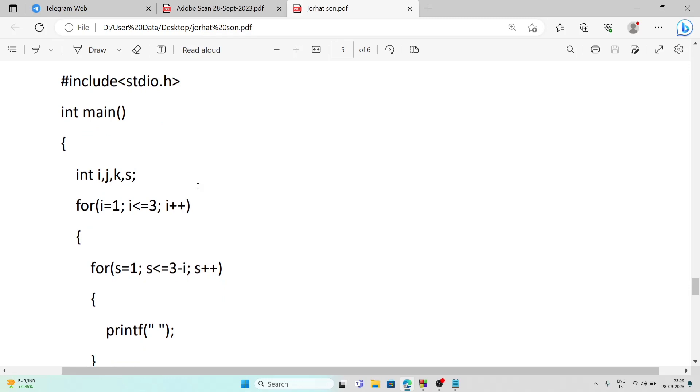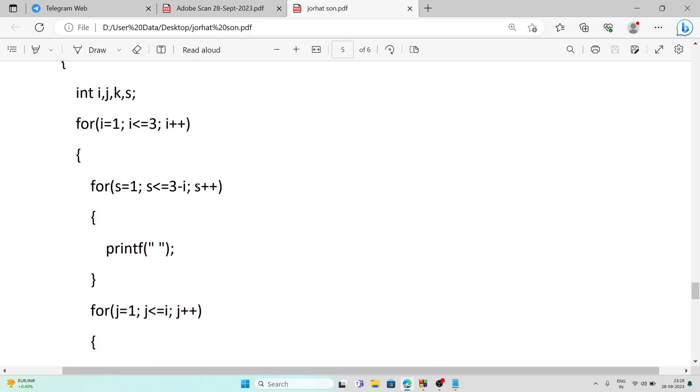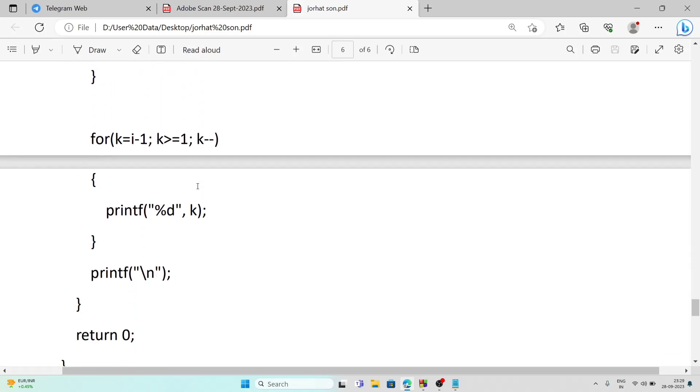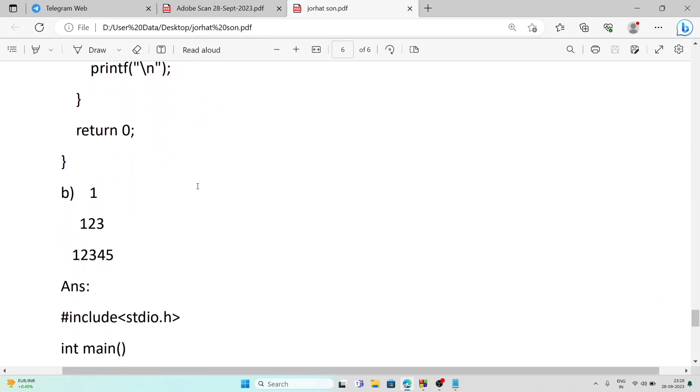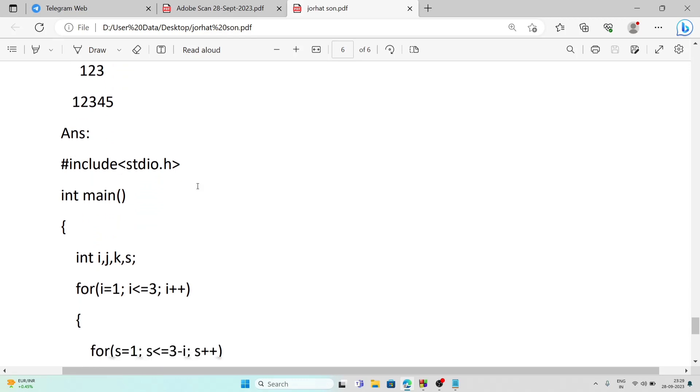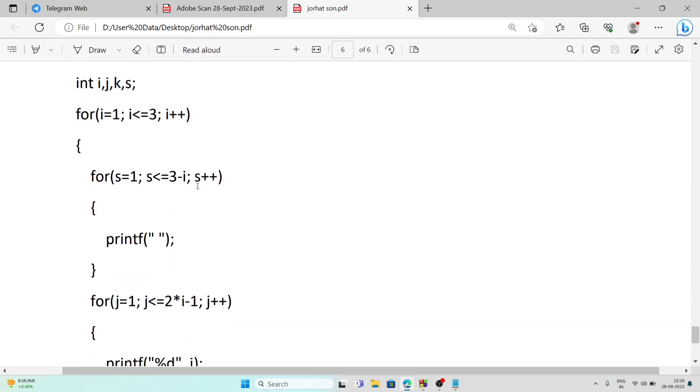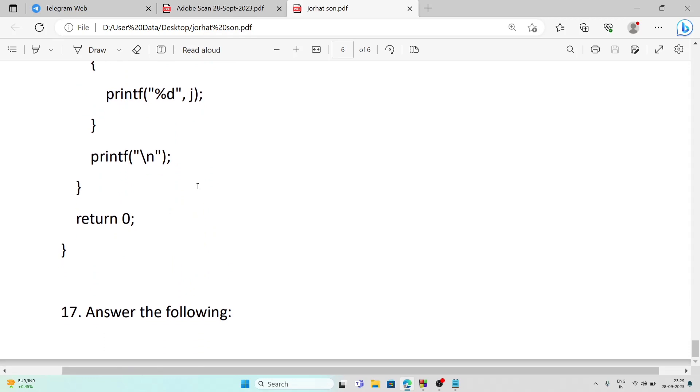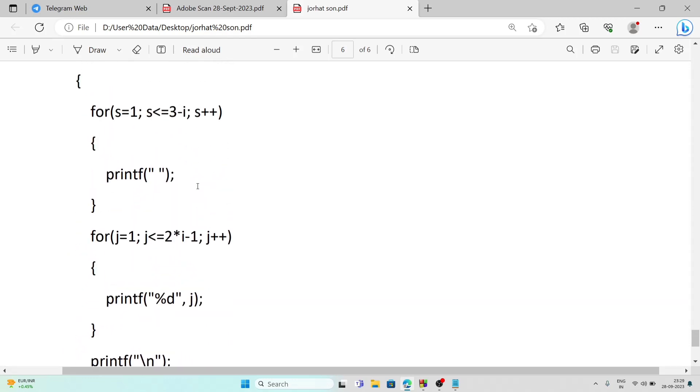Number 16, for displaying this pattern 1, 1 2 1, 1 2 3 2 1, this nested loop will be used. We will take four variables i, j, k, s. i for the main loop, j, k inside one, and s for spaces. So this way you can do it. And here 1 2 3 1, 1 1 2 3, 1 2 3 4 5, so this way you can do it.